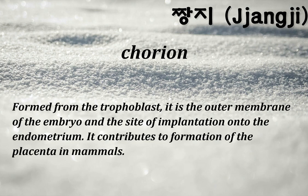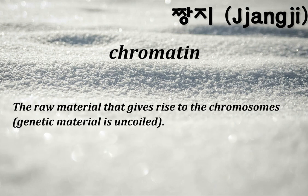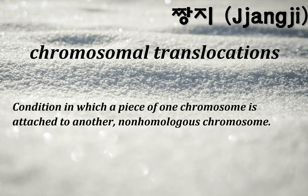Chorion: formed from the trophoblast, it is the outer membrane of the embryo and the site of implantation onto the endometrium; it contributes to formation of the placenta in mammals. Chromosomal translocations: condition in which a piece of one chromosome is attached to another non-homologous chromosome.